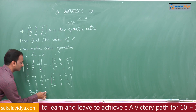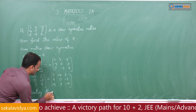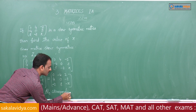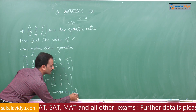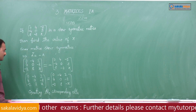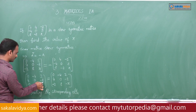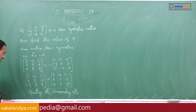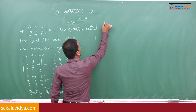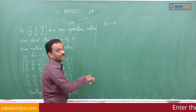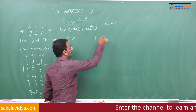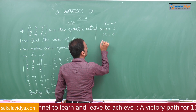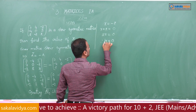Equating the corresponding elements, we get x equals minus x. To find the value of x, we write x plus x equals 0, so 2x equals 0, therefore x equals 0.